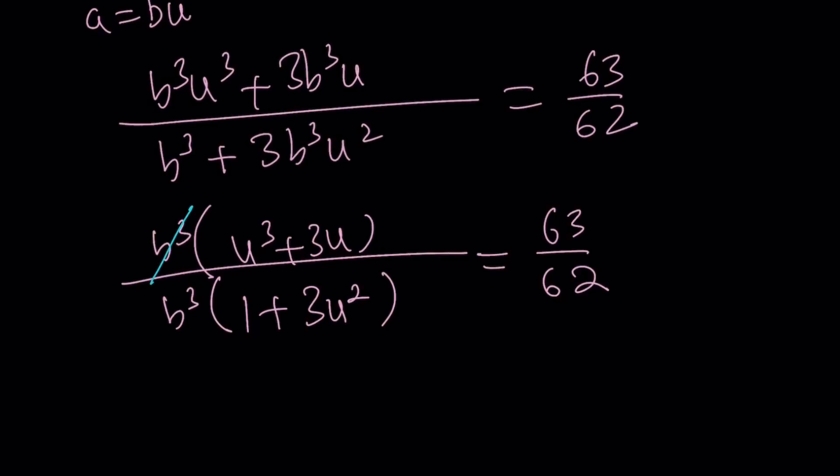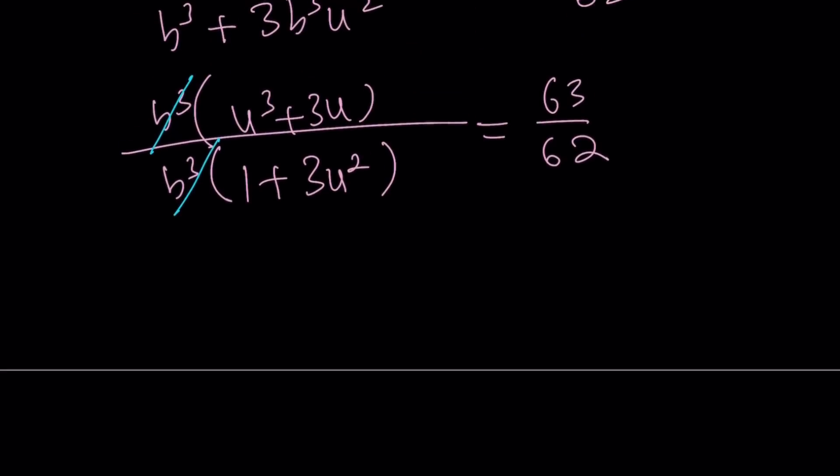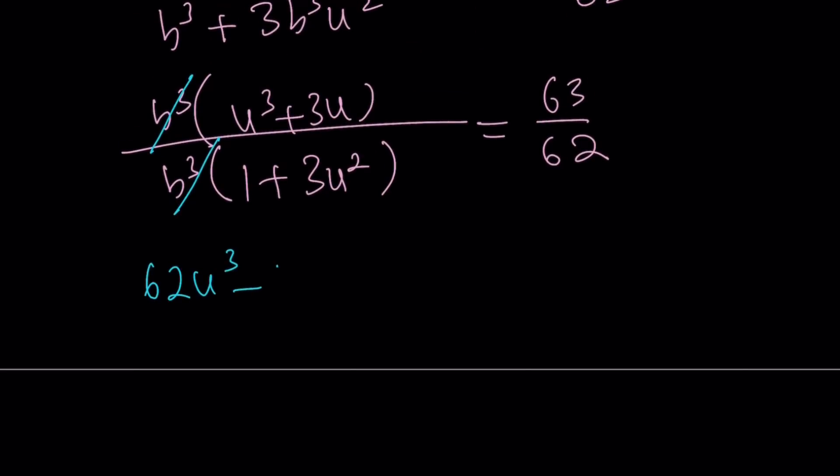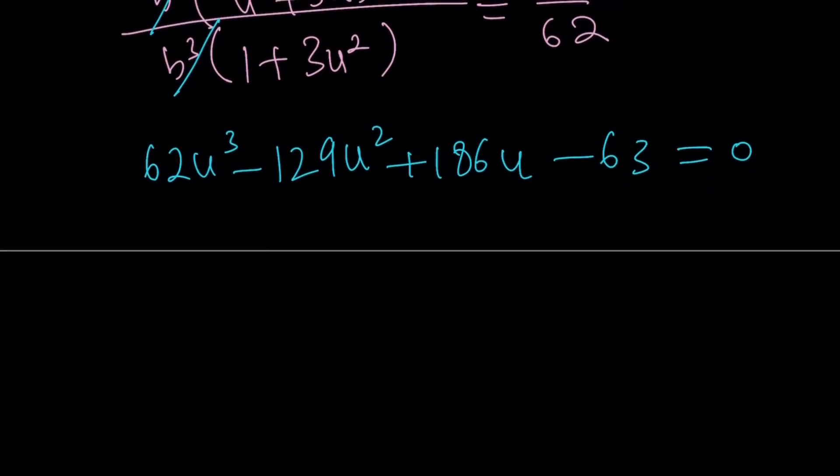leaving us with a cubic equation. After cross multiplication, we get the following. We get 62U cubed minus, and let me just go ahead and give you the cubic here without further ado. It's going to become, this is going to become our cubic equation. Now how do you solve this cubic equation? Well, you can kind of use the rational root theorem, or you can kind of use, you know, Tartaglia's formula, whatever you want to call it, the cubic formula.